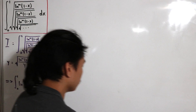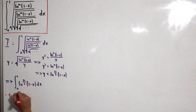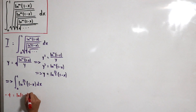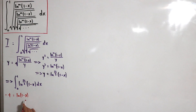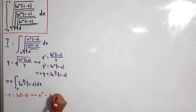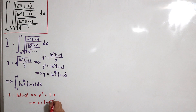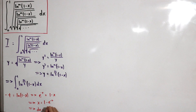I'll call the substitution variable t. We define negative t equals the natural log of (1 minus x). Taking e to both sides: e^(−t) equals 1 minus x, which gives x equals 1 minus e^(−t). Differentiating both sides: dx equals e^(−t) dt.